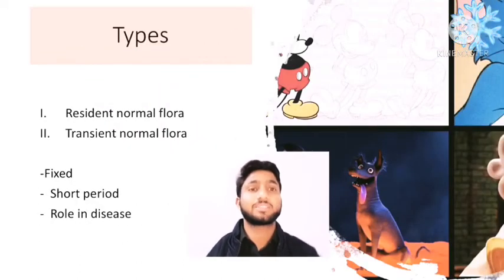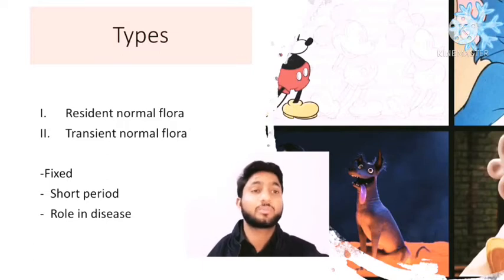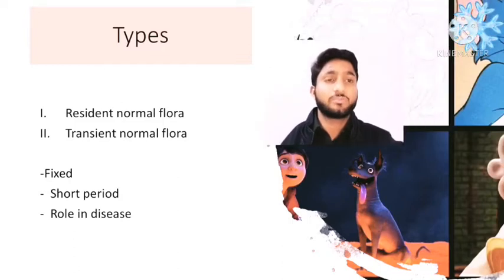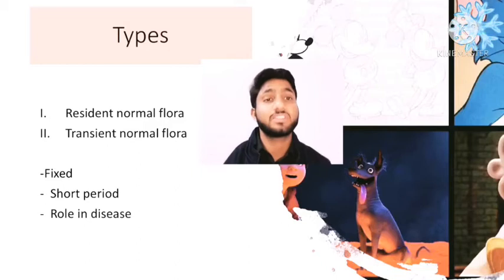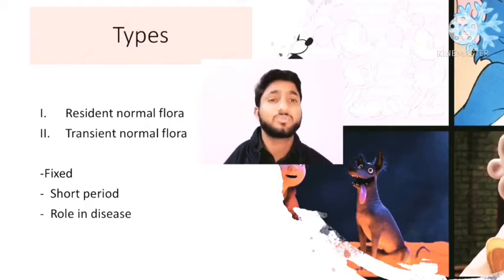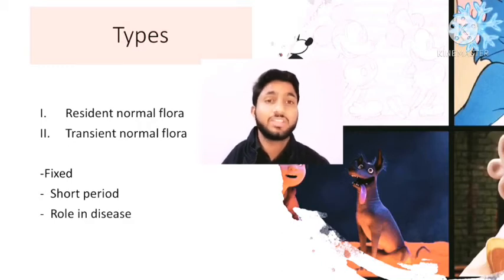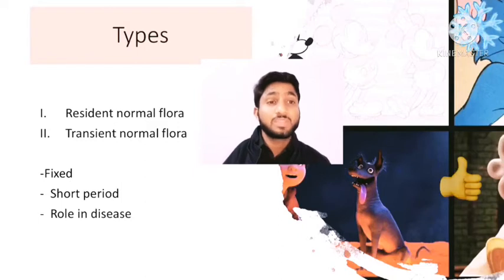There are two types of normal microflora. The first is resident normal microflora, and the second is transient normal microflora. Resident normal microflora are microorganisms which reside on different bodily sites permanently throughout life — such as on the skin or oral cavity. Transient microorganisms, however, are present for only a few days or weeks and are then replaced or destroyed by other microorganisms.